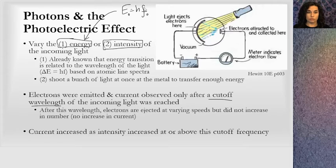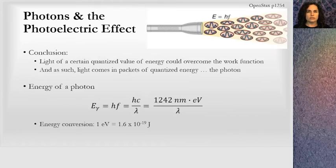What was observed is electrons were emitted and current observed only after a cutoff wavelength or frequency. There's some sort of frequency, the cutoff frequency of the incoming light. After this wavelength, electrons were ejected at varying speeds but did not increase in number. You'd think if you would add more energy, increase the intensity, you would get more electrons. But what happens is there was the same number of electrons but each had a larger energy after ejection, contrary to what you would expect.